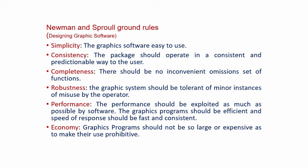Completeness: the set of programs should be complete. It should not have omissions in any part, and no part should be missing from the package. Each graphic software should have a complete set of functions and programs. Robustness: the graphic system should be tolerant of minor instances of misuse by the operator, whether knowingly or unknowingly. The system itself should rectify the error so that errors do not appear in the output image. A self-rectifying capability should be designed into the graphic software.